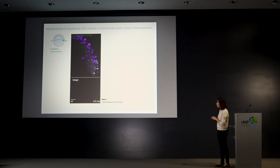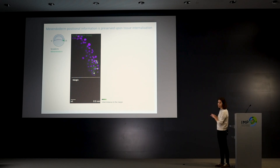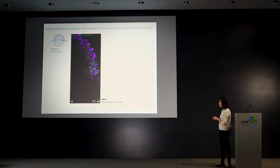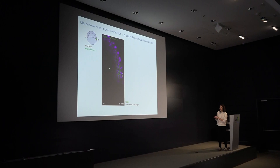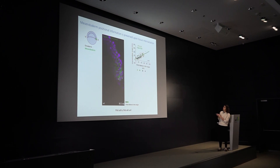Keep in mind that lighter colors indicate cells closer to the margin and darker colors indicate cells further away. When this movie plays you can see how ordered the whole process actually is: cells that are initially very close to the margin internalize earlier than cells located further away, and you can quantify this to get a very nice linear relationship.